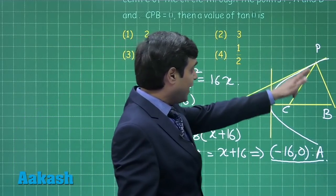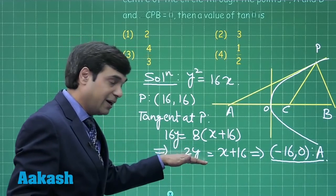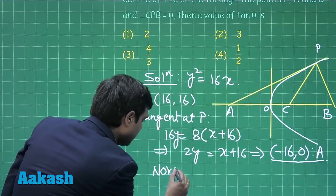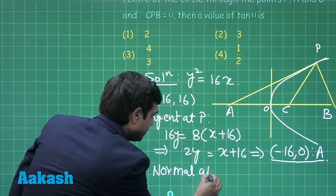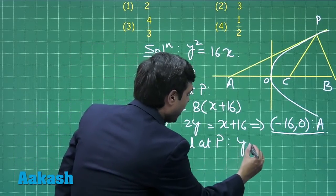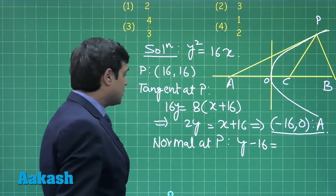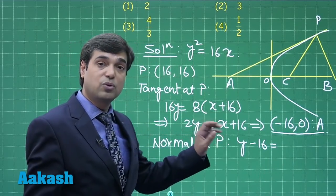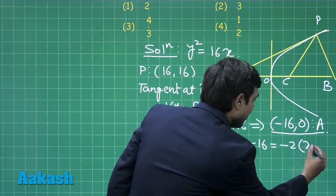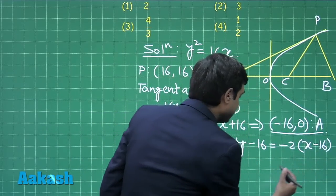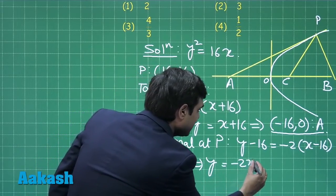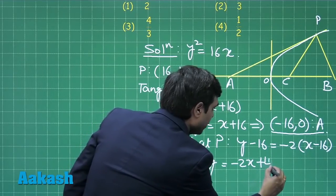Normal at P. Normal means perpendicular to this line. We can write it as normal at P, that is y - 16 equals, slope of the tangent is 1/2, so slope of the normal will be -2, that is -2(x - 16) or simply y = -2x + 48.